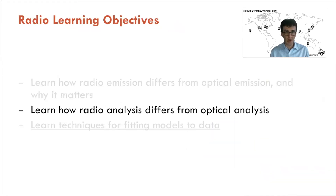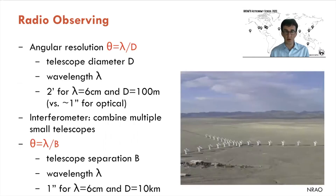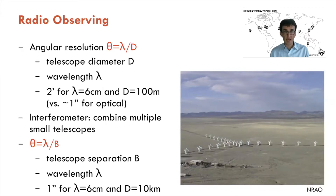Radio analysis differs from optical analysis in several key ways. The angular resolution of any telescope, theta, is set by the diffraction equation: theta equals wavelength divided by diameter. For a normal radio observation with a wavelength of six centimeters and a typical 100-meter radio telescope, that gives an angular resolution of only two arc minutes — pretty bad. Emission from a kilonova would be blended with many nearby sources, compared to about one arc second for a typical optical image.